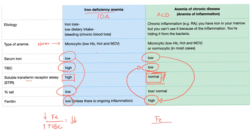For percent saturation in anemia of chronic disease — iron over TIBC — the serum iron decreased. The percent saturation could be normal, but when iron decreases even more than TIBC, it's going to be low. If these iron studies are confusing to you, watch my video on iron studies in my hematology playlist.